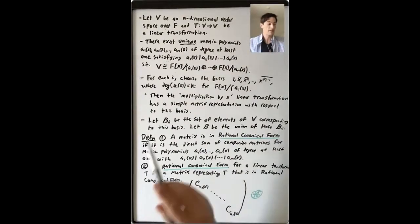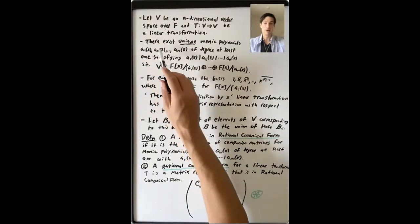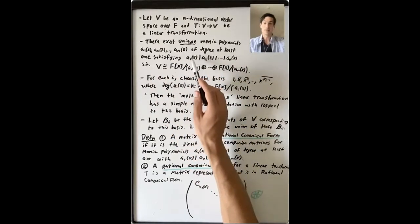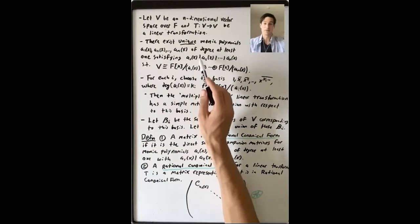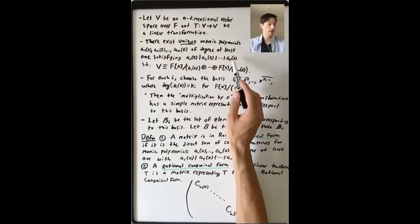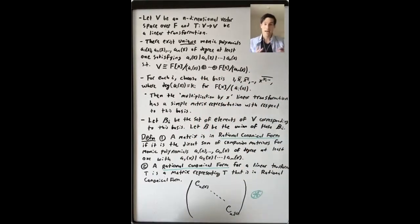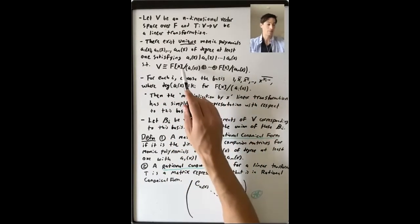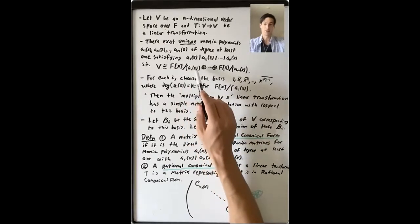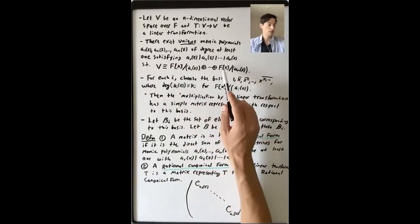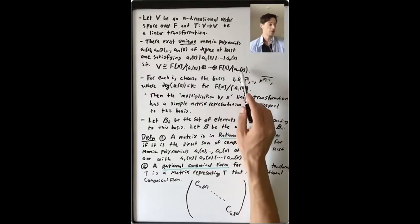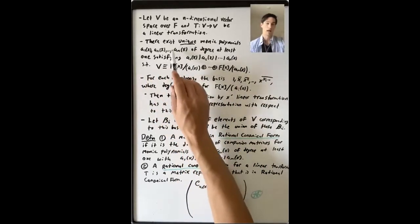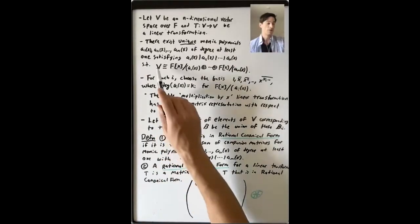We know that there exist unique monic polynomials A1, A2, up to AM of X of degree at least one, satisfying the divisibility relations A1 divides A2, A2 divides A3, and so on. V is isomorphic to a direct sum of cyclic F-bracket-X modules, F[X] mod the ideal generated by AM. These polynomials are called the invariant factors of V.